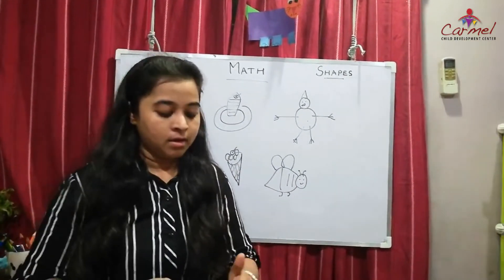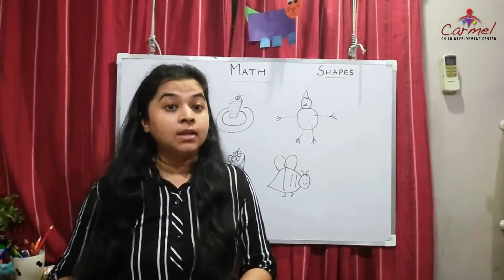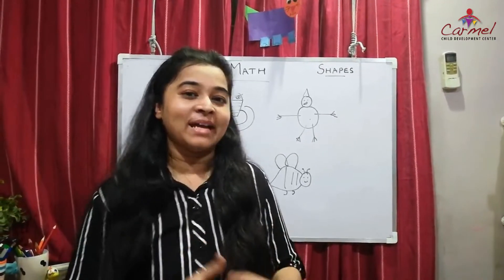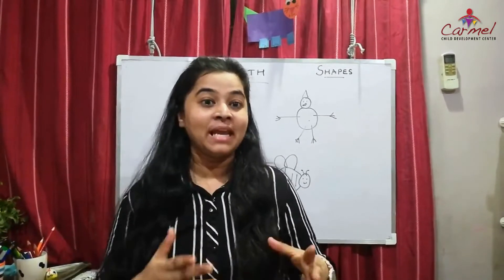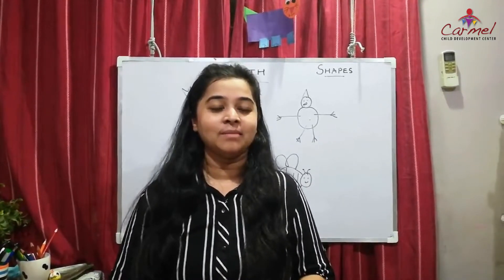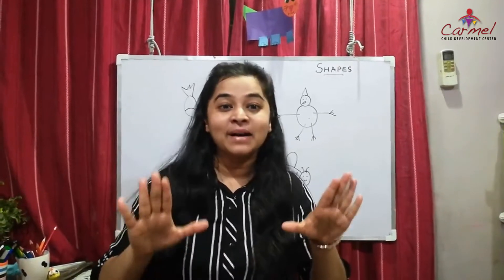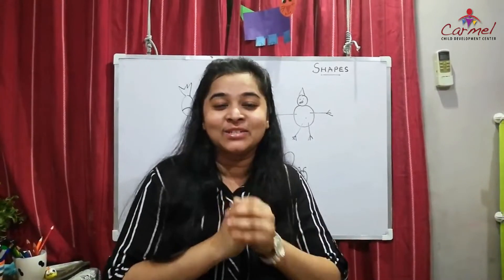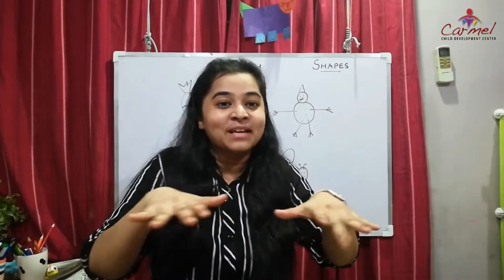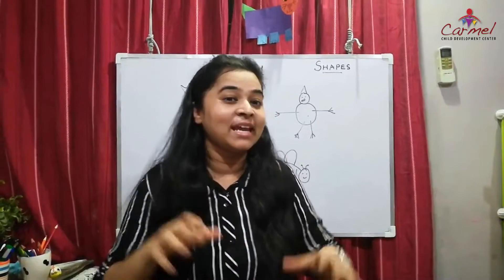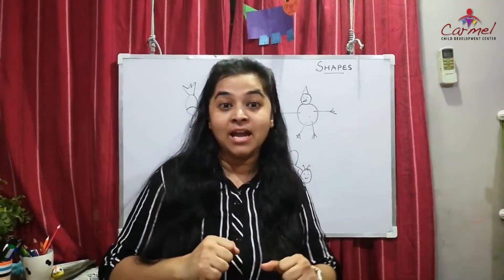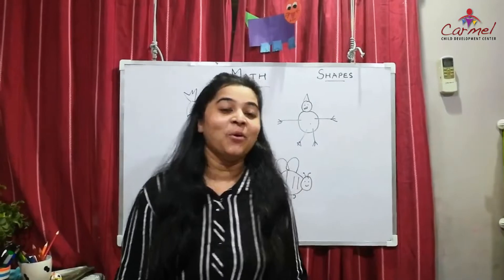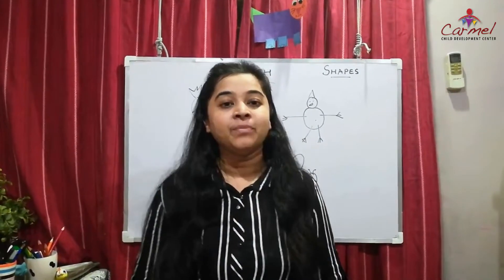You can even remember the numbers by reciting number rhymes. Let's sing: One two buckle my shoes, three four shut the door, five six pick up the stick, seven eight lay them straight, nine ten a big fat hand. I hope you enjoy the rhymes!